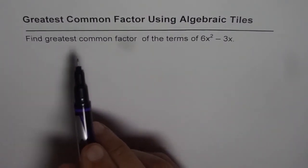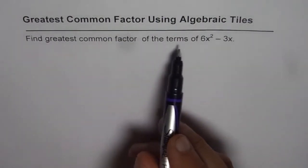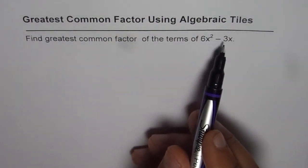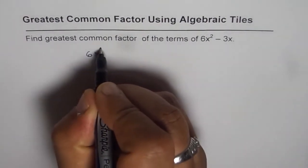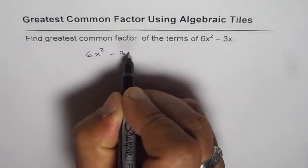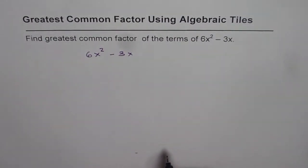The question is, find the greatest common factor of the term 6x² minus 3x. So we have 6x² minus 3x. We need to arrange them in the form of a rectangle.